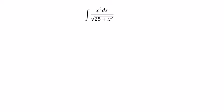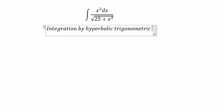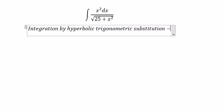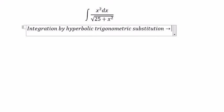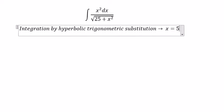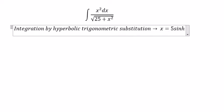Now I will show you the technique we need to use about integration by hyperbolic trigonometric substitution. So we put x equal to 5 sinh u.